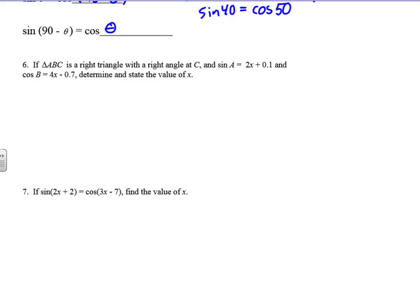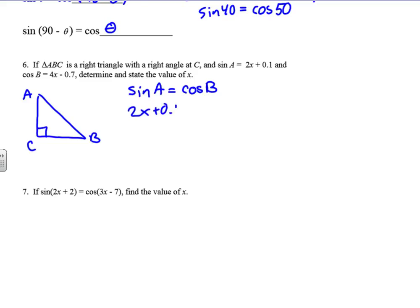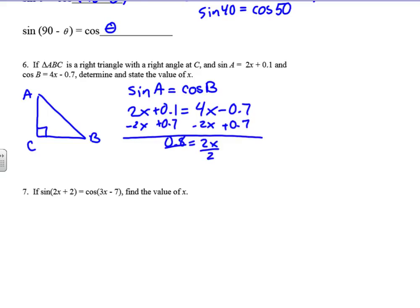If triangle ABC is a right triangle with right angle C, and the sine of A equals 2x plus 0.1 and the cosine of B equals 4x minus 0.7, determine and state the value of x. We know the sine of A has to equal the cosine of B. So: 2x plus 0.1 equals 4x minus 0.7. Subtract 2x and add 0.7 to get 0.8 equals 2x. Divide by 2: x equals 0.4.